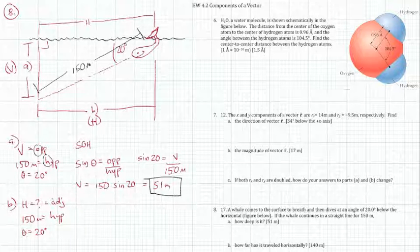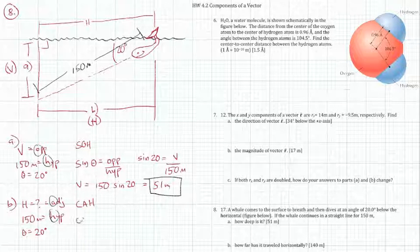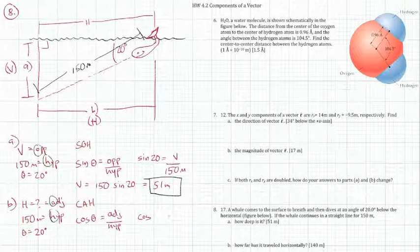Well, using our sine functions, again, which one involves the A and the H? I think you're all thinking right now, of course, that is the C, the C in SOH CAH TOA, which of course means that the cosine of the angle equals the adjacent over the hypotenuse. So the cosine of our angle, which is 20 degrees, equals the adjacent H, which is what we want to find, over the hypotenuse, which is 150 meters.